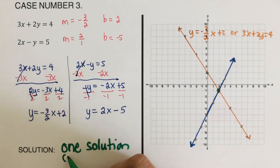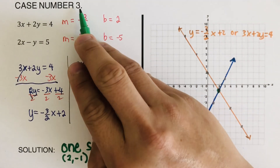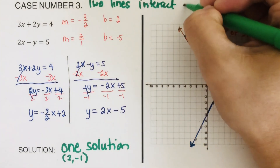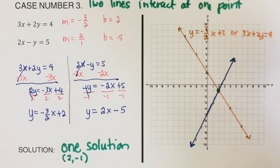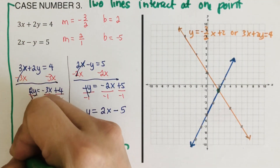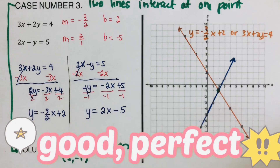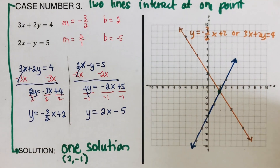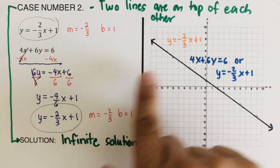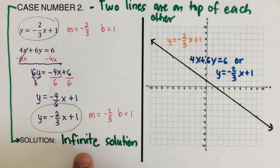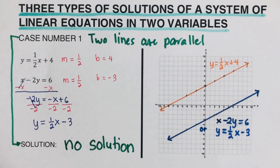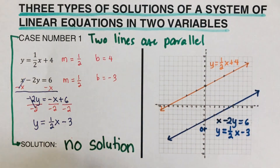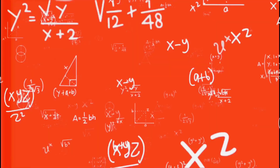This case has one solution: the point (2, -1). This is case three, which happens when two lines intersect at one point — there is only one solution. To summarize all three cases: case one, two lines are parallel — no solution; case two, two lines are on top of each other — infinite solutions; case three, two lines intersect at one point — one solution.